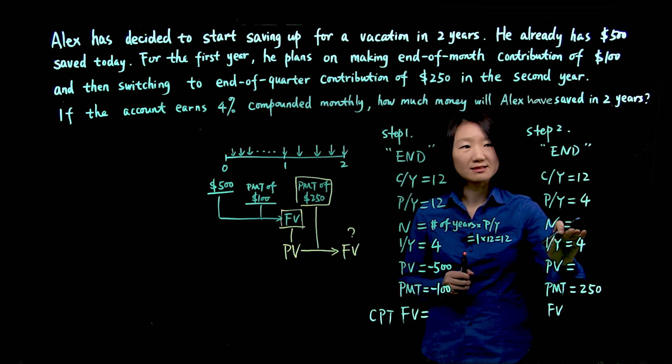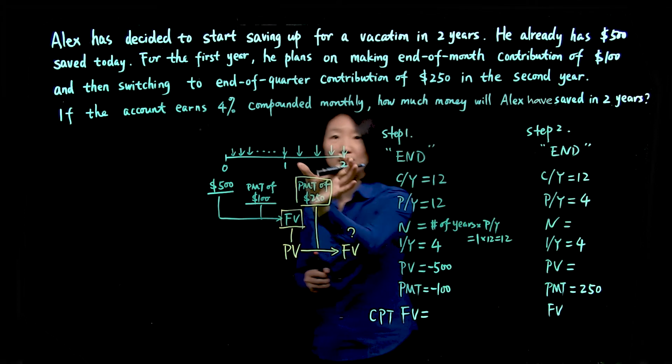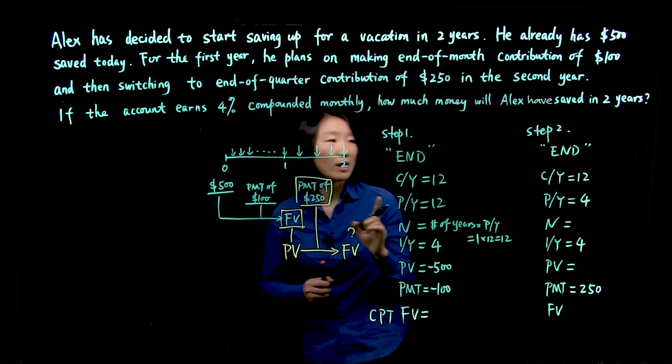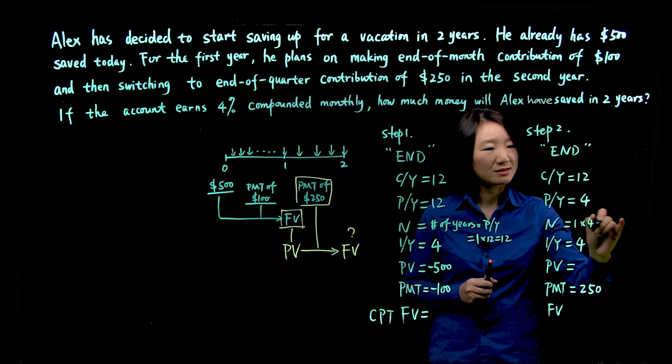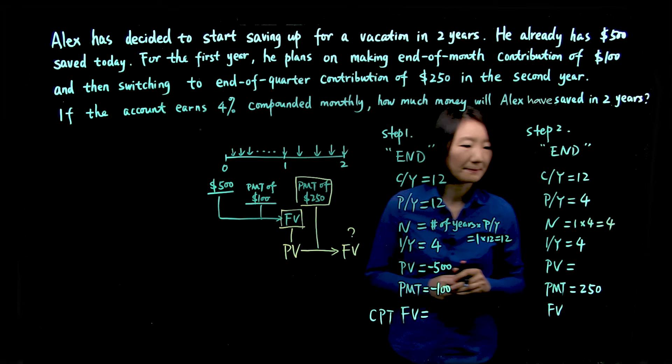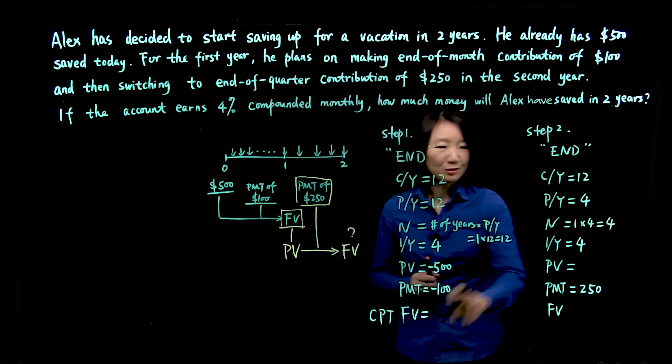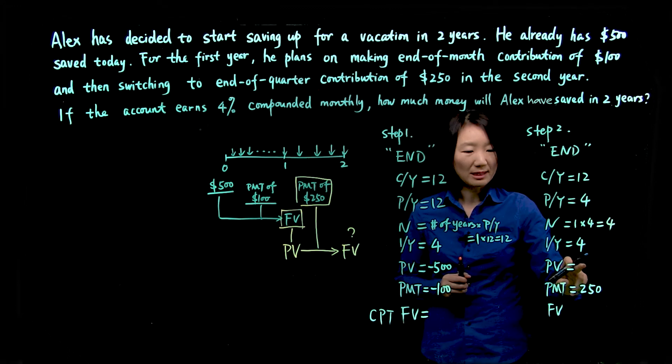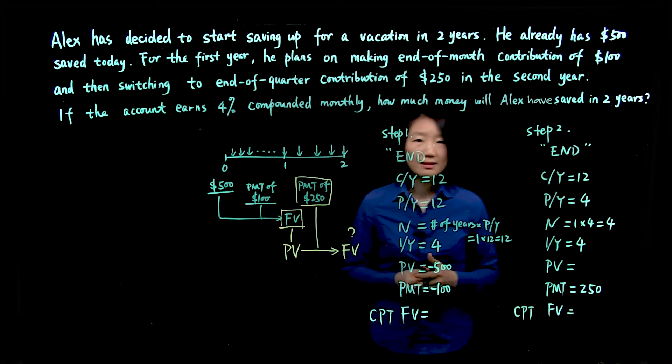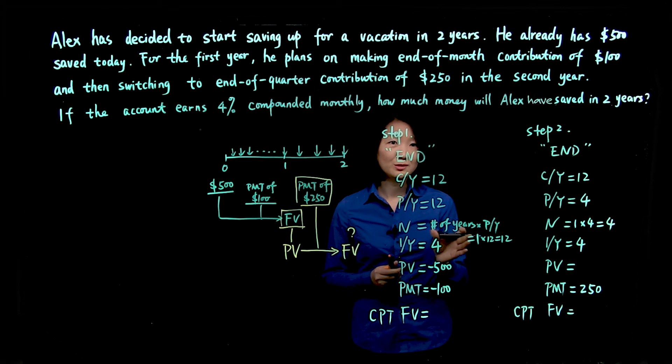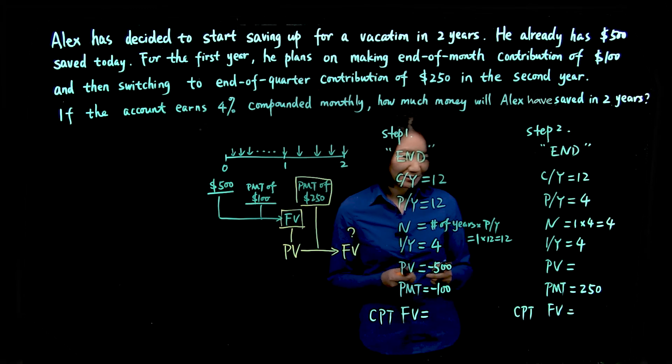N is number of years times PY. So we're looking at the second year, so that's just one year. One year times PY, which is 4, so N is 4. And after we identify this PV from step one, we can just compute future value. Okay, now we're ready to use the financial calculator to solve the problem.